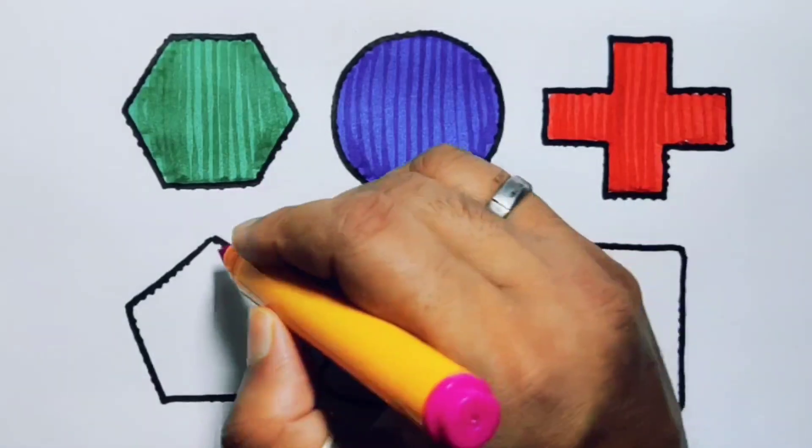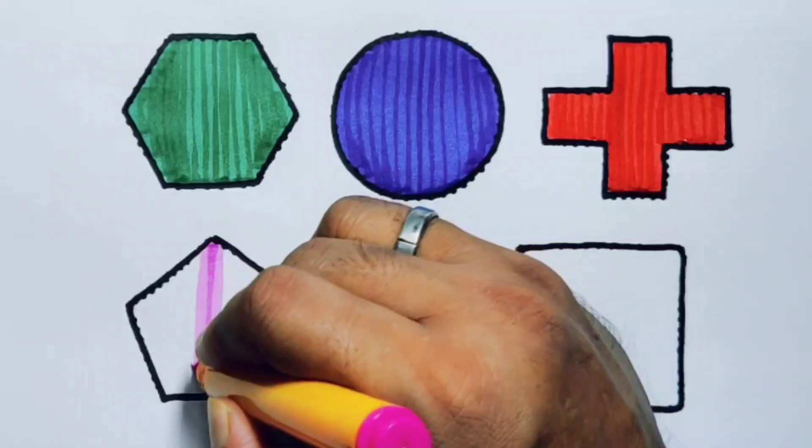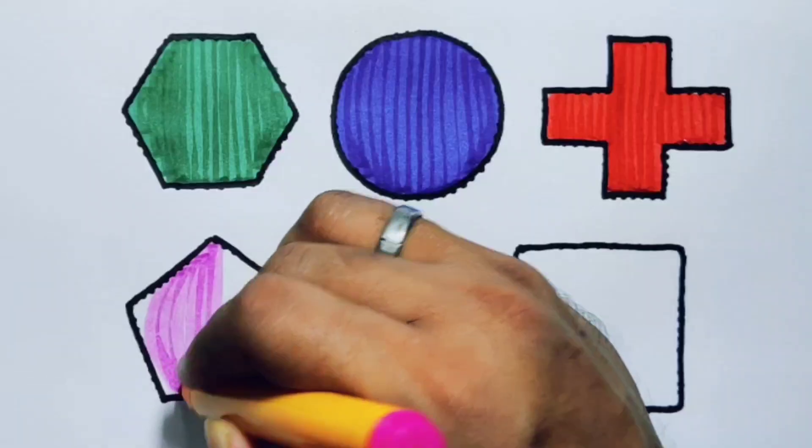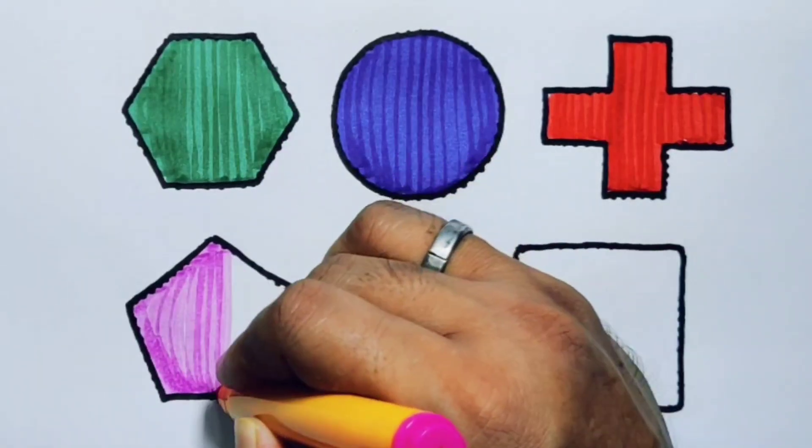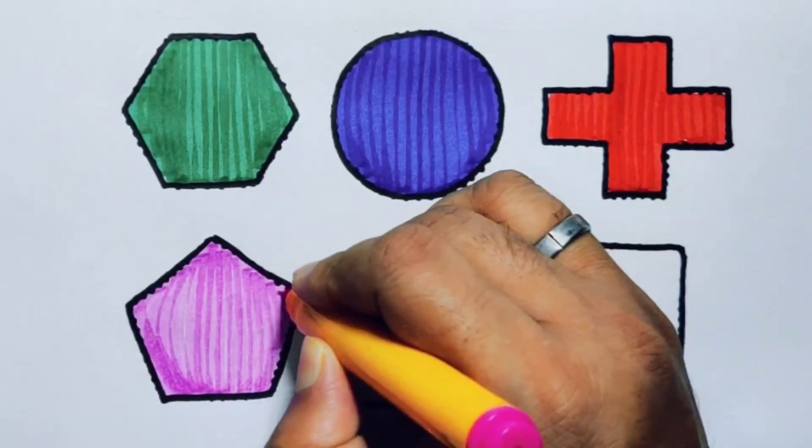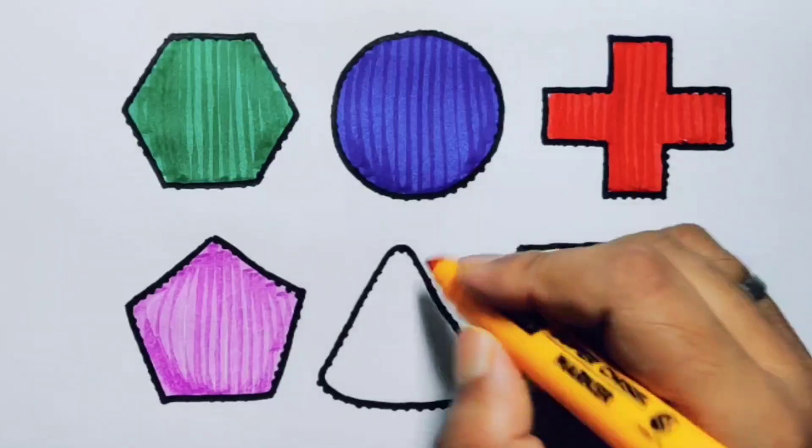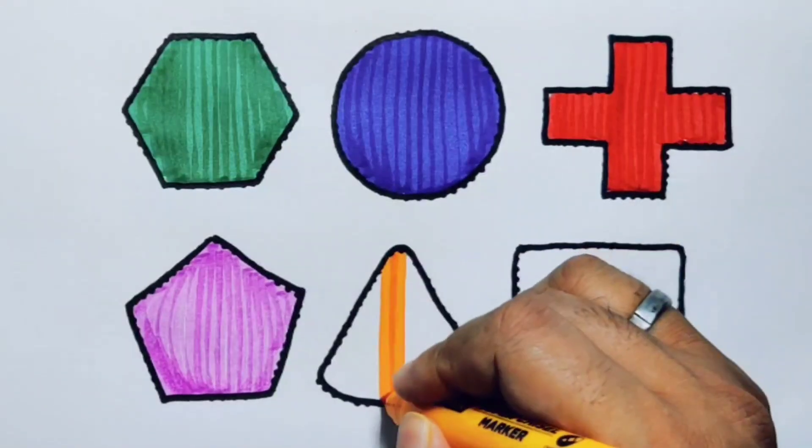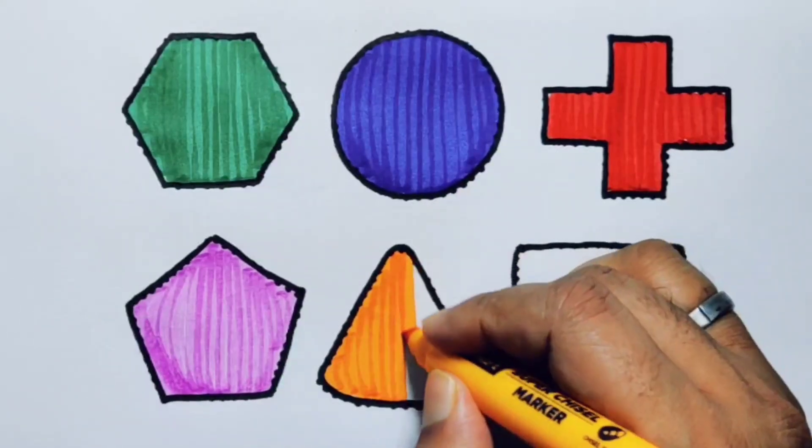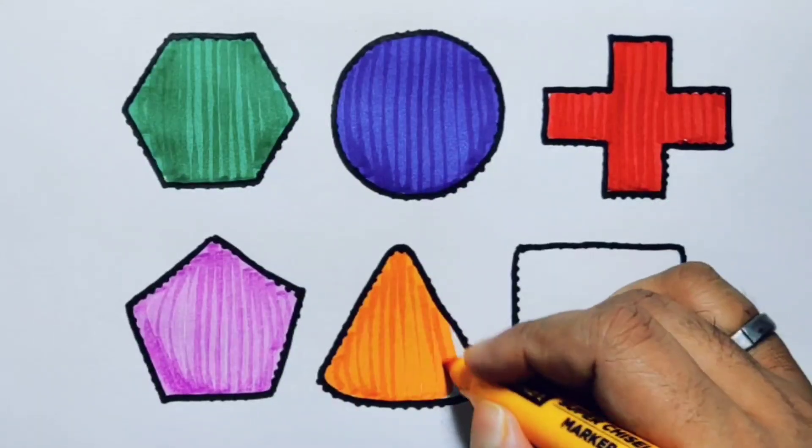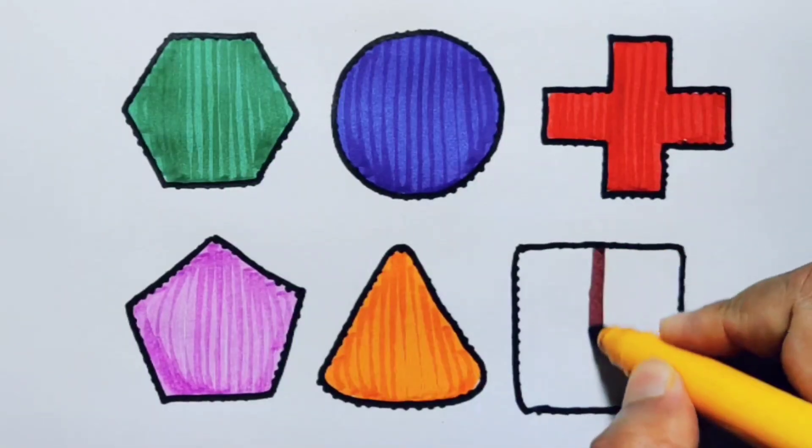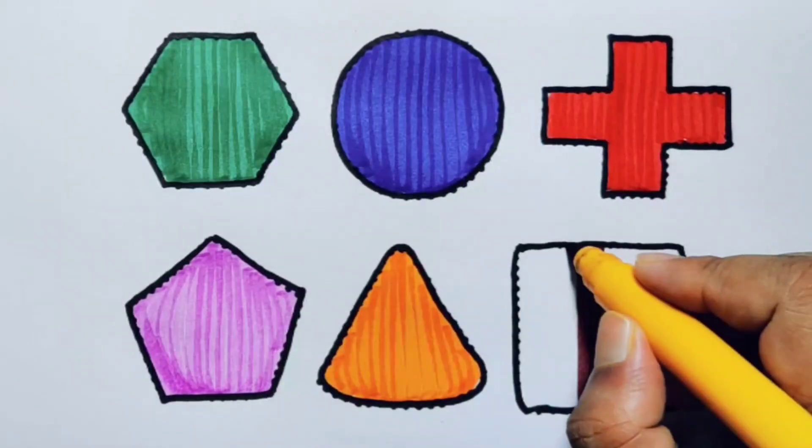Pink colored pentagon. Orange color triangle. Chocolate color square.